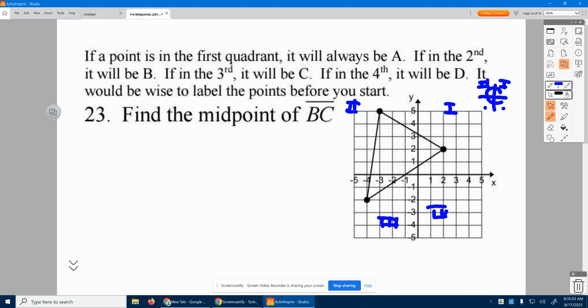It says if a point is in the first quadrant, it will always be the point A. So he is A. If it's in the second, it is B. He's in the second, so he's B. And this point's in the third, so he is C.